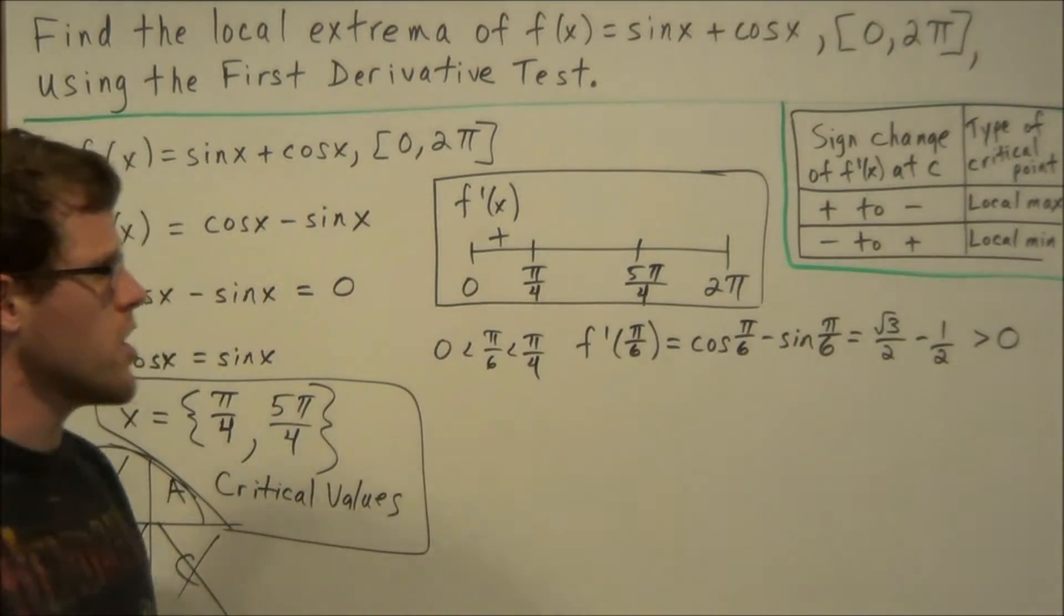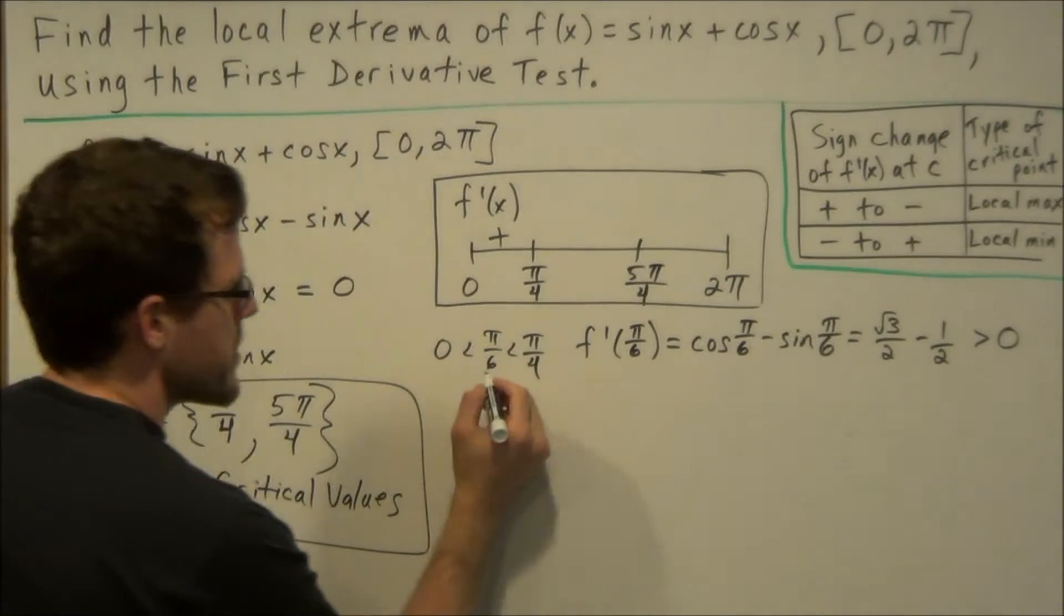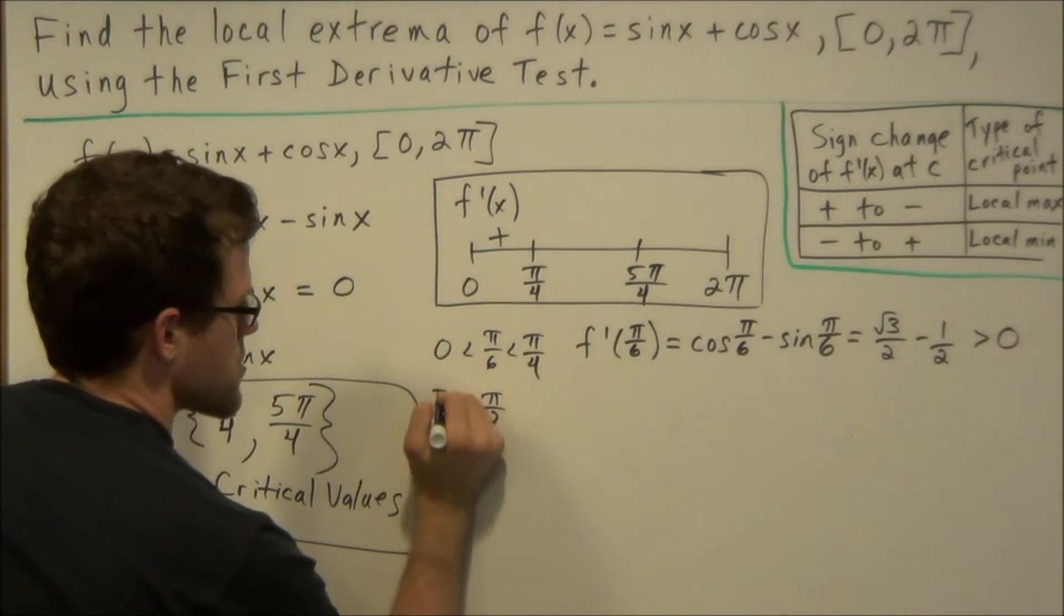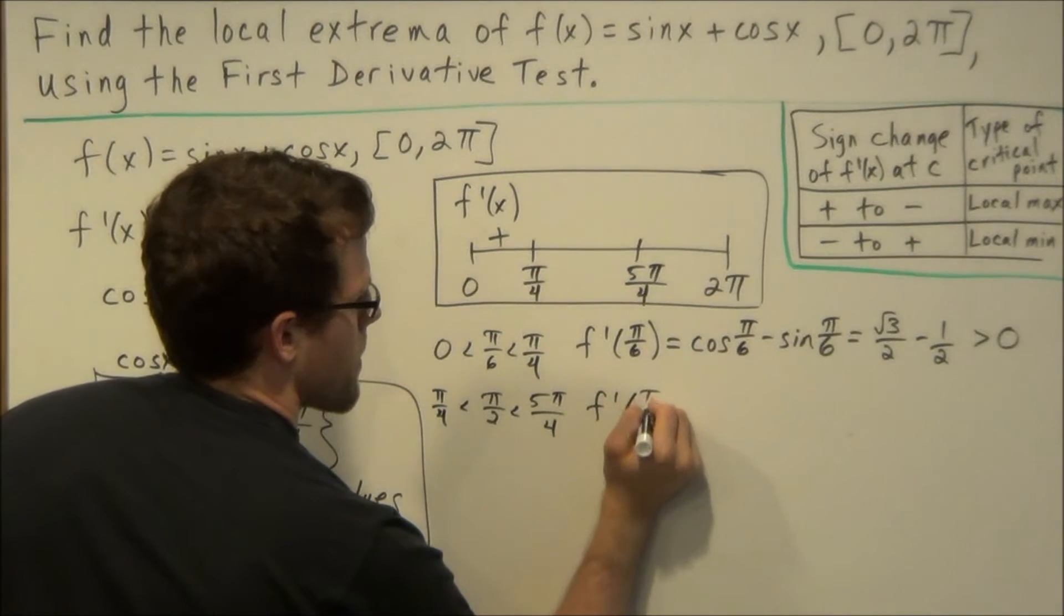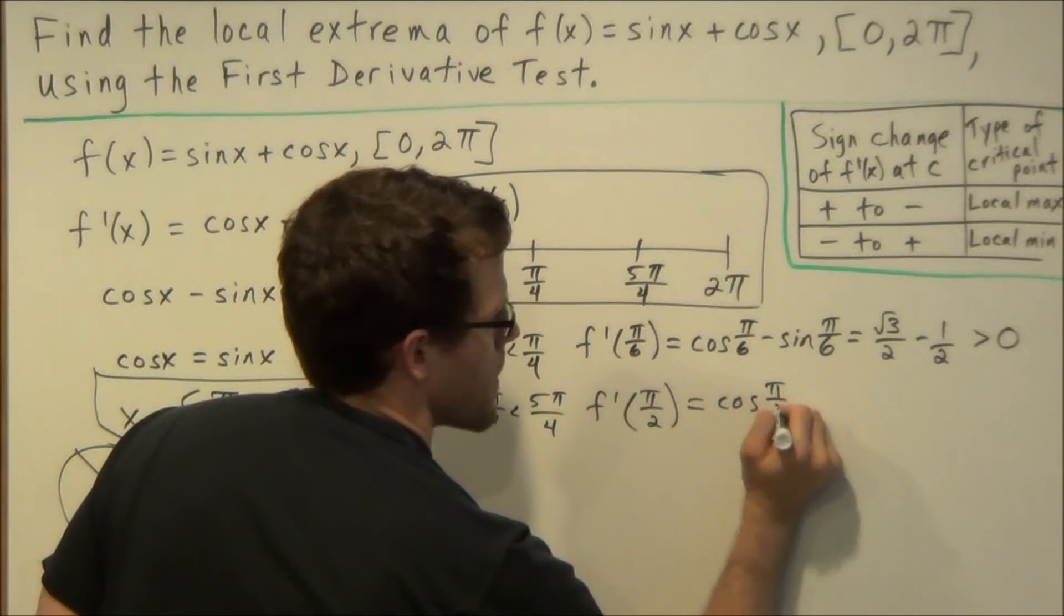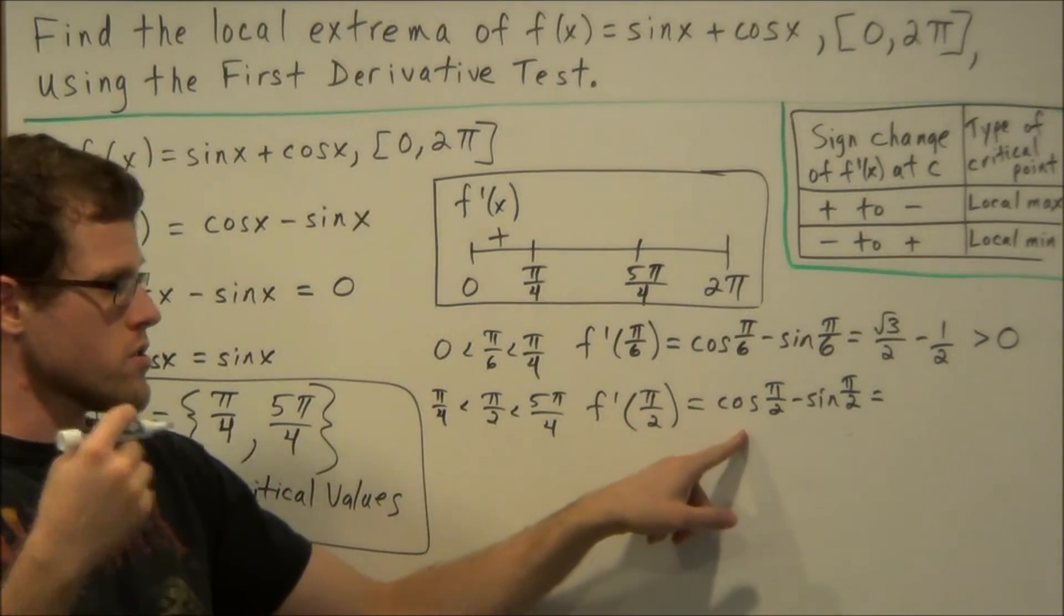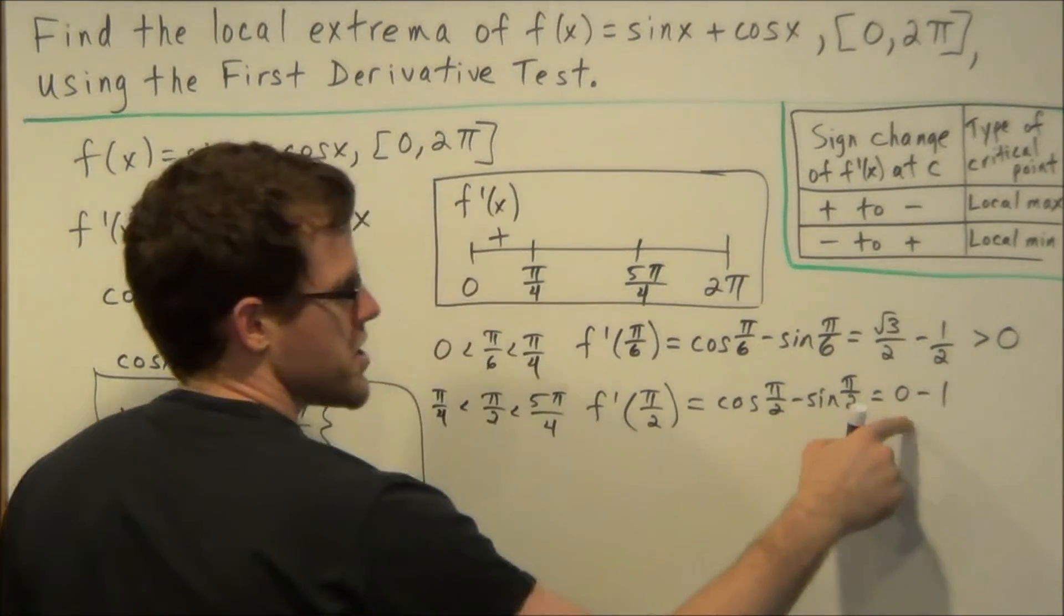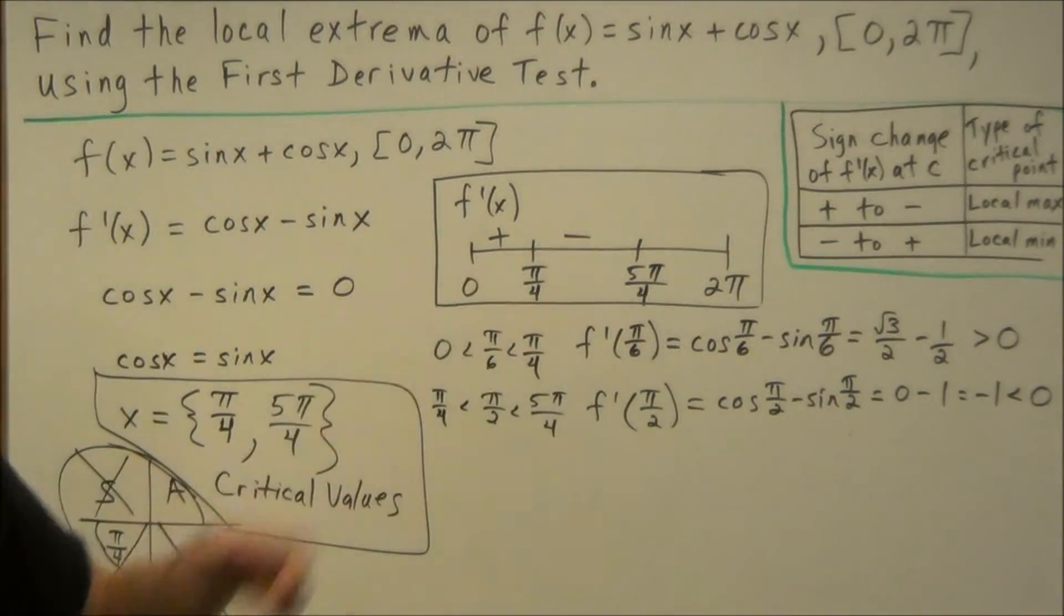So now we need to pick a value between π/4 and 5π/4. π/4 is 45 degrees and this is 225 degrees. So if we pick 90 degrees or π/2, that's going to be an appropriate value to plug into our first derivative here. And this is between π/4 and 5π/4. So if we plug in π/2 into our first derivative, that's going to give us cosine of π/2 minus sine of π/2. Now using the unit circle, we look to the unit circle. If you have one, you can draw it out. But cosine of π/2 is 0 minus sine of π/2 is 1. And 0 minus 1 is negative 1, which is definitely less than 0. Which allows us to label this here as negative.